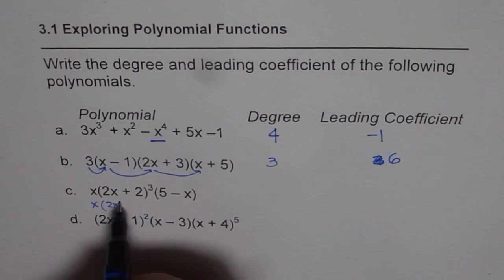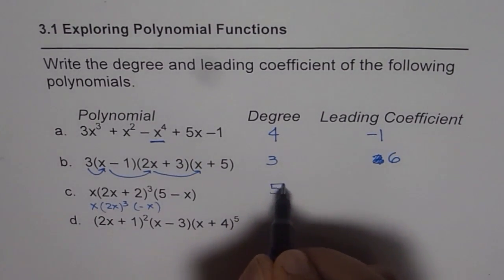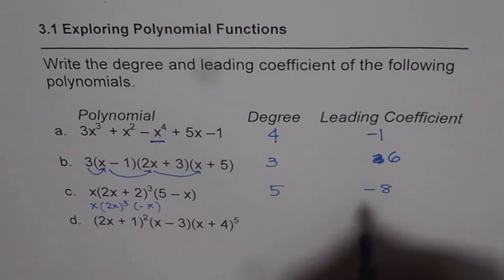Now degree will be 1 plus 3, 4 plus 1, 5. So degree for us is 5 and the leading coefficient is 1 times 2 cube, which is 8 times minus. So it is minus 8.